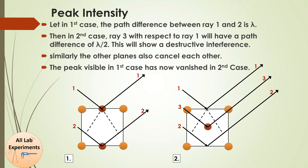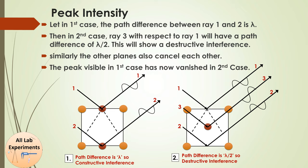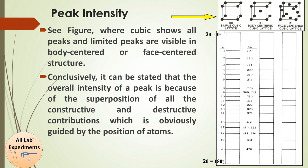In the body-centered case, there is an extra plane at the center of the body. For ray 1 and ray 2 the path difference is λ, but ray 3 from the middle plane has a path difference of λ/2, causing destructive interference. In this way, the arrangement of atoms determines whether a peak is observed or not. A simple cubic lattice shows 20 peaks between 0° and 180° in 2θ, while body-centered and face-centered cases have some peaks disappear due to systematic absences.